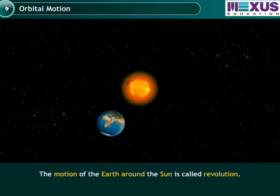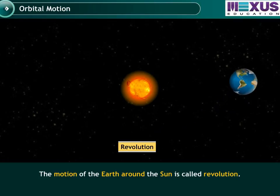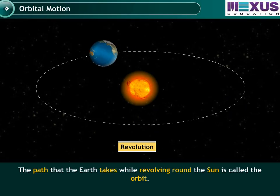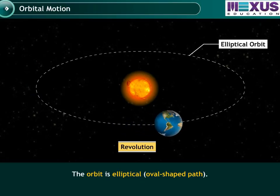The motion of the Earth around the Sun is called revolution. The path that the Earth takes while revolving around the Sun is called the orbit. The orbit is an elliptical or oval-shaped path.